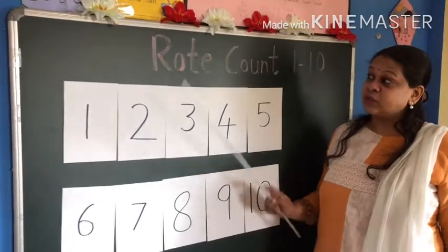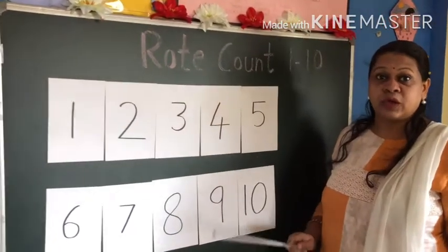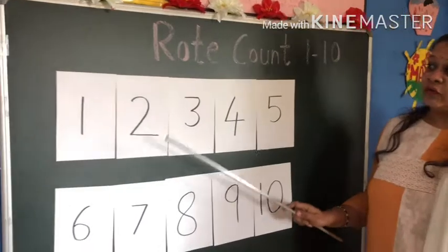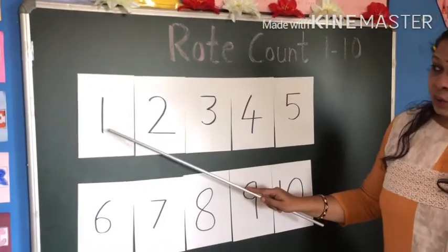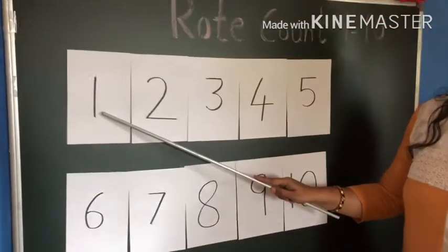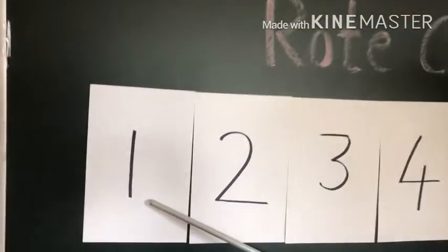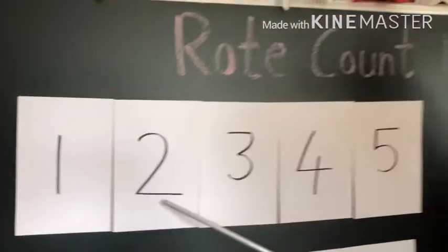Today we are going to count the numbers, how we have to count the numbers. For that we will start with number 1, which is this number. This is the first number, ok, 1, which is this number, 2.